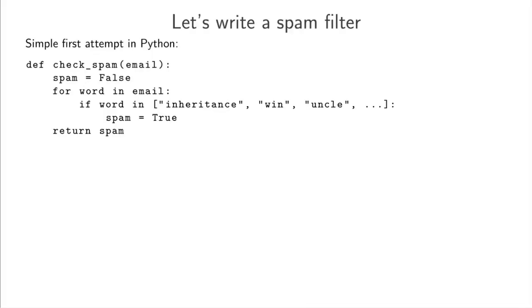Let's imagine we want to write a program to detect spam emails. Before you watch on maybe you can pause and think how you might do this. You could even scribble down some pseudocode. So here's my first simple attempt in Python at a spam filter. We've got a function here called check spam and the function takes in an email which is basically just the list of words contained in that email.